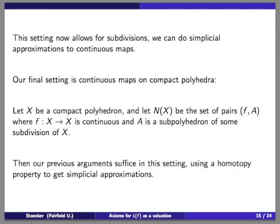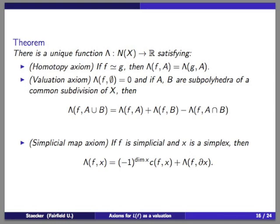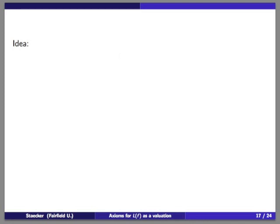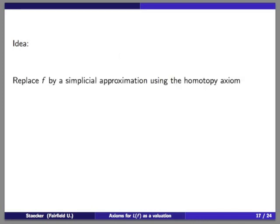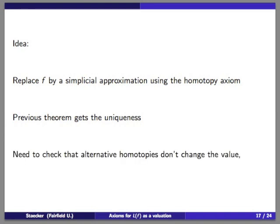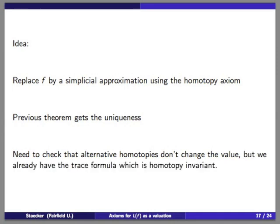Our final setting for the Lefschetz number is continuous maps on compact polyhedra. The new domain N(X) is the set of pairs (f, A) where f is continuous and A is a sub-polyhedron of some subdivision of X. The same theorem applies, but now we use the homotopy property: if you have a continuous map, you use homotopy invariance to change it to a simplicial map and proceed as before. There is a unique function λ satisfying homotopy invariance, the valuation property, and the normalization property.